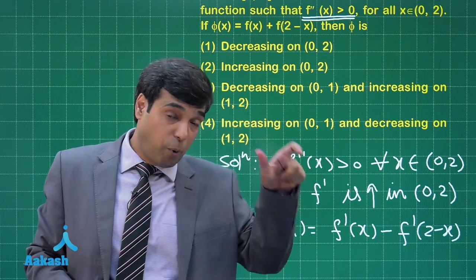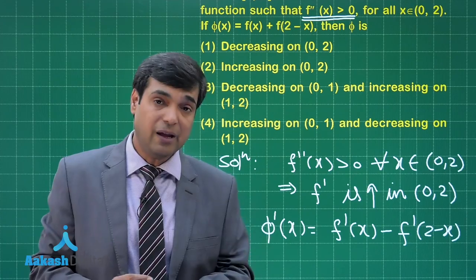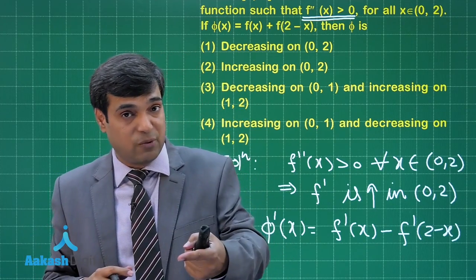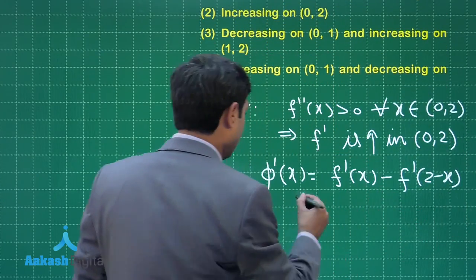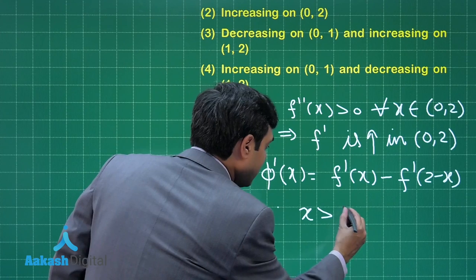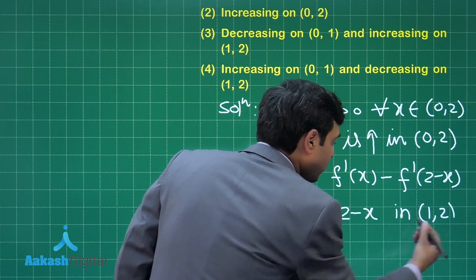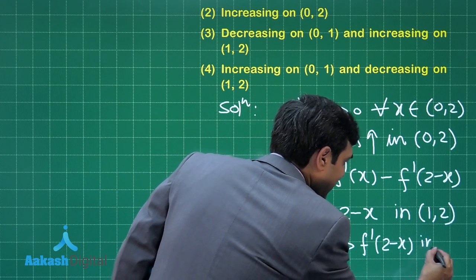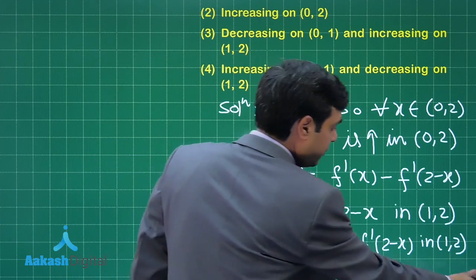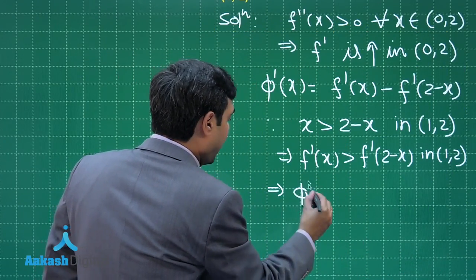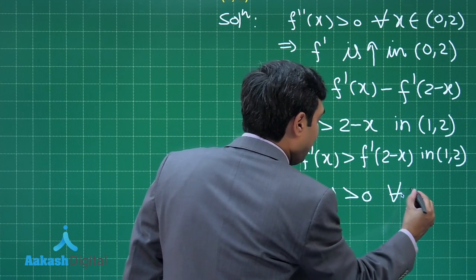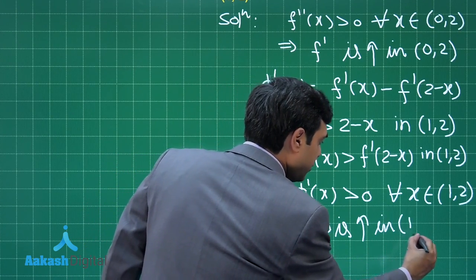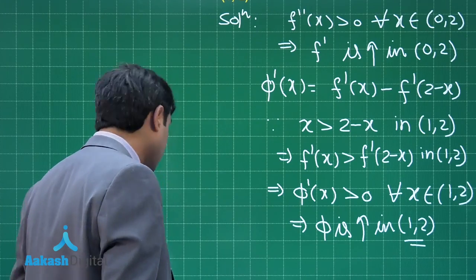Since f' is increasing, if x > 2 − x (i.e., x in (1, 2)), then f'(x) > f'(2 − x), so φ'(x) > 0 for all x in (1, 2), meaning φ is increasing on (1, 2).